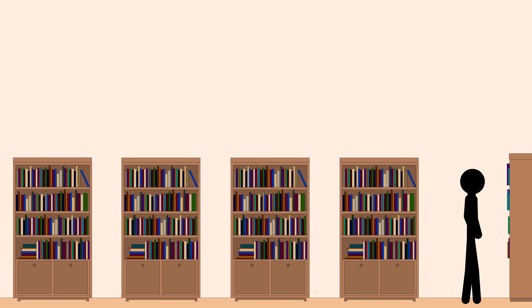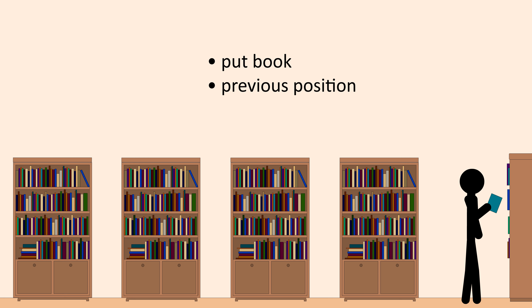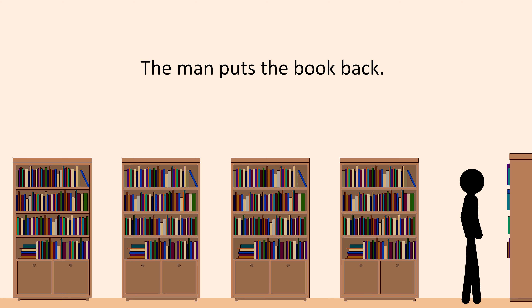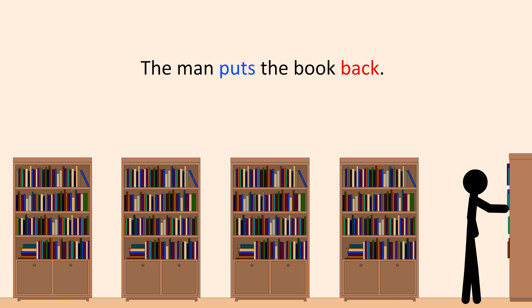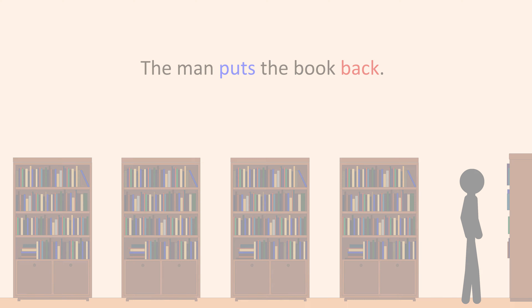All right, let's try another one. How do you think we could describe this using a phrasal verb with back? Here, the man puts the book in its previous position. So we can say, the man puts the book back. Puts means put, and back means previous, or previous position. So the sentence just means, the man puts the book in its previous position.